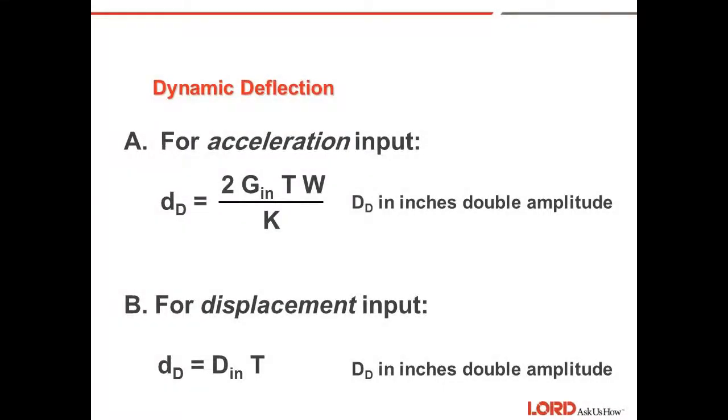Dynamic deflection. No spring mass can completely isolate a disturbing vibration. Depending on the transmissibility, a certain amount of motion will occur at the mass. This motion is called dynamic deflection, or D sub D. It is calculated as double amplitude deflection with a total deflection in both directions.